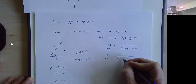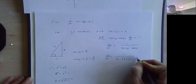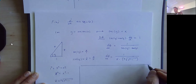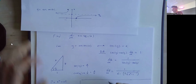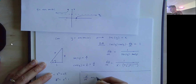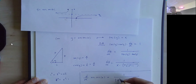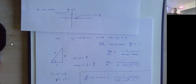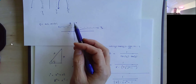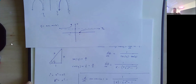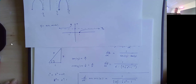Putting it all together: dy/dx equals 1 over secant y times tangent y equals 1 over x times (plus or minus square root of x squared minus 1). With our definition of arc secant, since the function is always increasing, the derivative is always positive, so we write it as 1 over the absolute value of x times the square root of x squared minus 1.